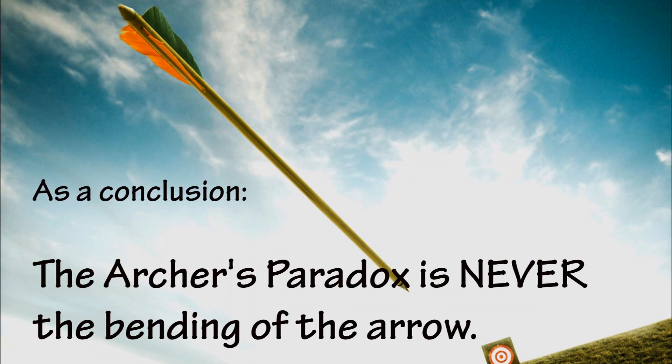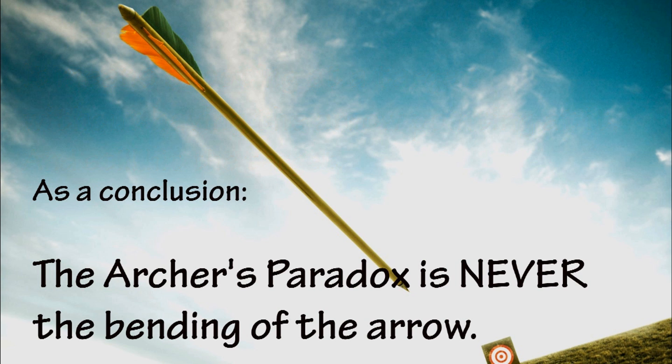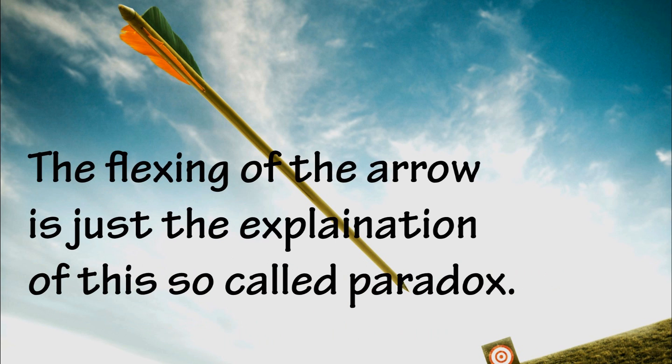As a conclusion, the Archer's Paradox is never the bending of the arrow. The Archer's Paradox is just shooting at the target without having your arrow pointing at it and still hitting the target. The flexing of the arrow is just the explanation of the Archer's Paradox.